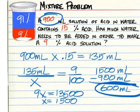And that means you have to add 600 milliliters of water in order to make that 15% acid solution down to 9%.